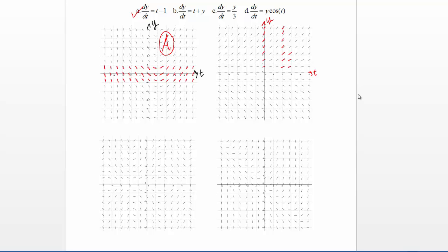If I stayed at a constant y level, for example y equals zero, and I go along here, these slopes are all the same for different t values. Then I conclude that this direction field corresponds to the differential equation C, so independent of t.